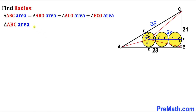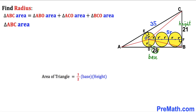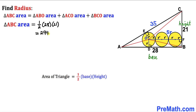Now let's calculate the area of the big right triangle ABC. Using the formula: area = ½ × base × height, with base = 28 and height = 21, the area of triangle ABC = ½ × 28 × 21 = 294 square units.